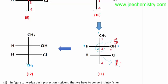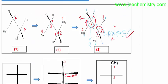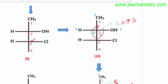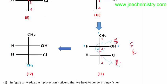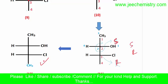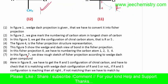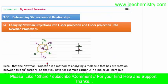So the final Fischer projection formula available is: second carbon is S and third carbon is R. This matches the Wedge-Dash position formula — second carbon is S and third carbon is R. This Fischer projection structure's configuration matches the Wedge-Dash position formula. In this way we can convert the Wedge-Dash projection formula into a Fischer projection formula. Now we will learn about converting the Newman projection formula to a Fischer projection formula.